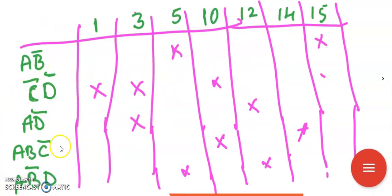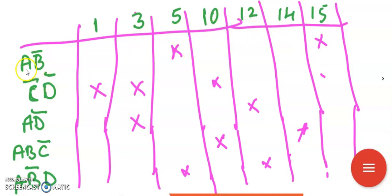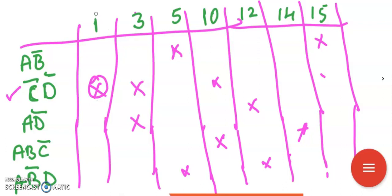For learning purposes, I've written some random content here to illustrate the general process. If these are the prime implicants and these are the main terms — possibly with don't cares — and these terms cover certain main terms as indicated, then scan through each column. If there is a single cross mark, that column's prime implicant is essential. For example, scanning here finds a single cross mark, so that term is essential — circle it. It covers main terms 1, 3, and 10.